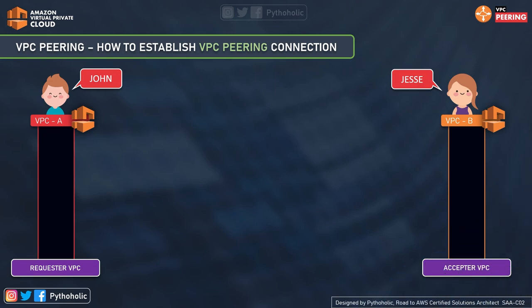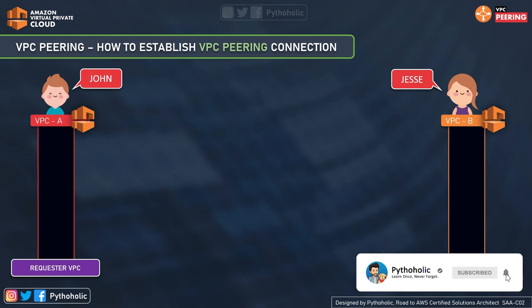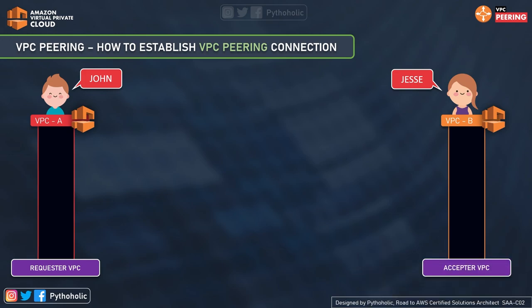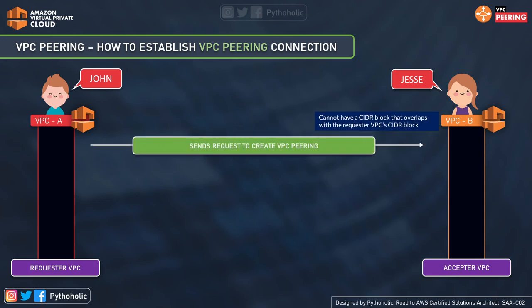Now let's talk about how we establish a VPC peering connection. We have John and Jesse, both VPC owners working on products with dependencies on each other. They decided to use VPC peering. John is the requester VPC owner who makes a request, and Jesse is the owner of the acceptor VPC. When you create a VPC peering connection, there has to be a requester who sends a request to another VPC to accept the peering connection. John sends a request to the VPC owned by Jesse to create the VPC peering connection.